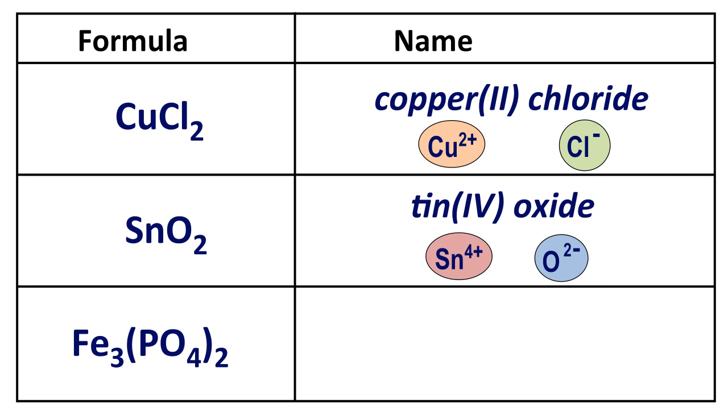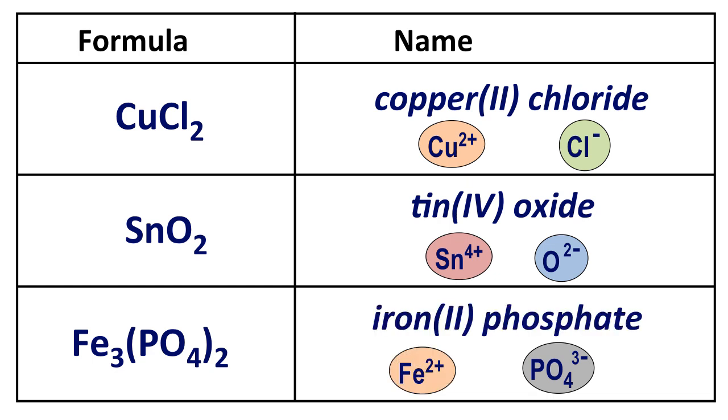Let's do one for formula going to name. Fe3(PO4)2. What's that called? Well, PO4 is a minus three ion. It's phosphate. If we have two of those, that's a total charge of minus six. So we need a total charge of plus six spread amongst three iron ions. So each iron ion must therefore have a plus two charge. And we would call that iron two and then phosphate. So the name of the compound is iron two phosphate.